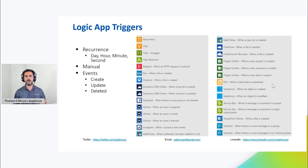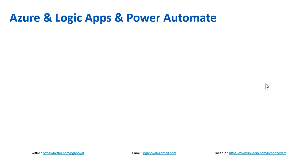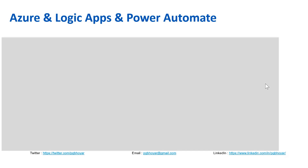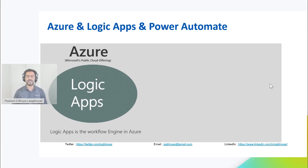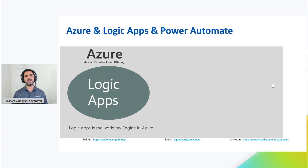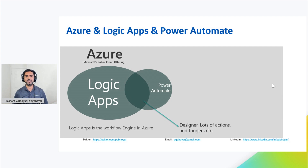If you look at the description of Power Automate and Logic Apps, they sound a little bit similar. Let's see how these two products are connected. Azure is one of Microsoft's public cloud offerings, and Logic App is the workflow engine in Azure. Back in 2016, when Microsoft announced Power Automate — it used to be called Microsoft Flow — it was built on top of Logic Apps. That means pretty much everything you can do in Power Automate, you could do in Logic App. Over time, Power Automate added its own features as well. There is still overlap in functionality, but now these two products also have unique feature sets. The designer and many actions and triggers are still common to both Logic Apps and Power Automate.